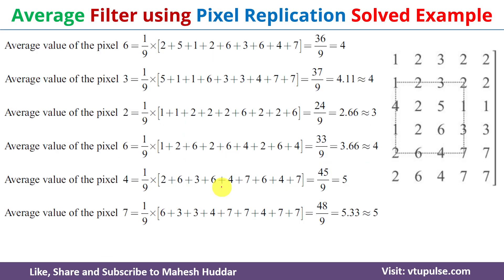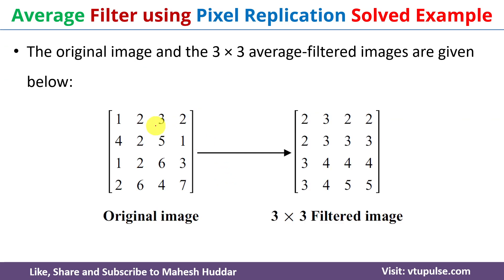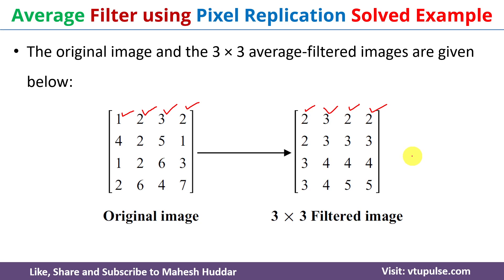Once you find all the average values, the next step is to replace the original pixel values with the average values. For the first pixel we got 2, for the second we get 3, for the third we got 2, and for the next 2 we got 2. We replace all pixel values by their average values. This is how we can calculate the average filter using pixel replication and zero padding. I hope the concept of average filter is clear. If you like the video, please like and share with your friends, press the subscribe button for more videos, and press the bell icon for regular updates. Thank you for watching.